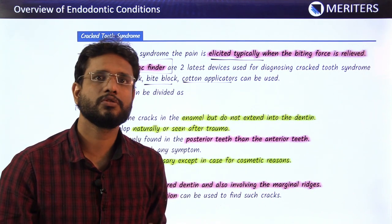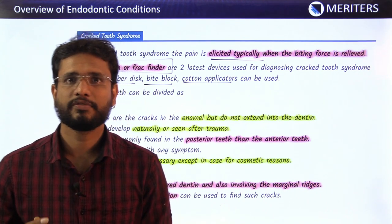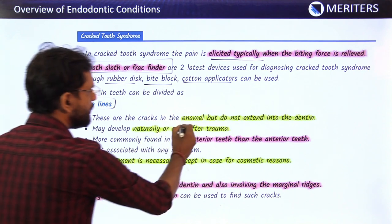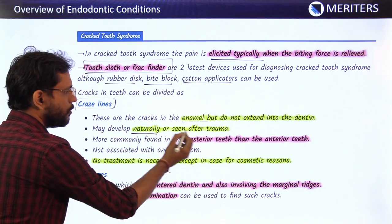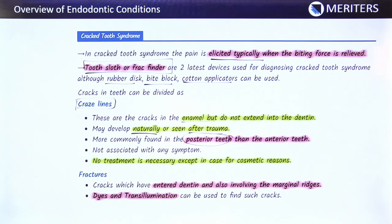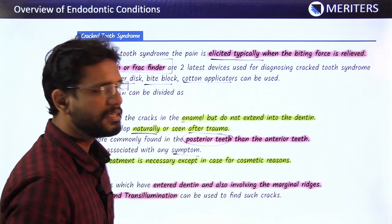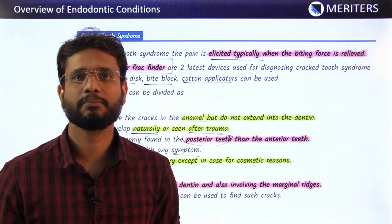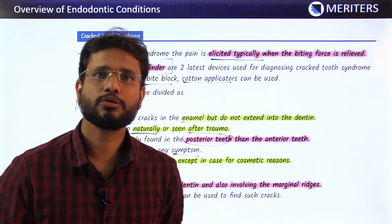Posterior teeth have more occlusal forces than anterior teeth, so craze lines are more common in posterior teeth. These cracks are limited to enamel, do not extend into dentine, and may develop naturally or after trauma. They are not associated with any symptom and no treatment is required. However, if in the anterior segment, the aesthetic aspect can be addressed by applying composite or tooth-colored restorations.